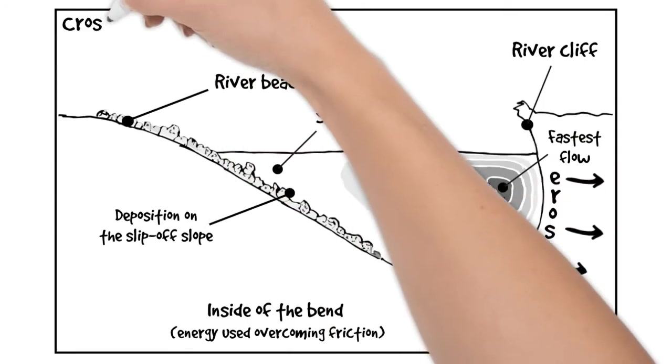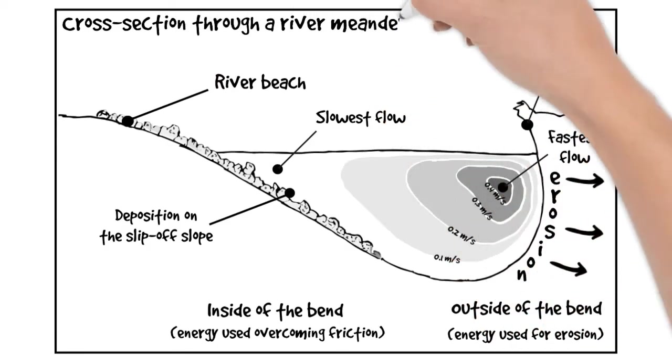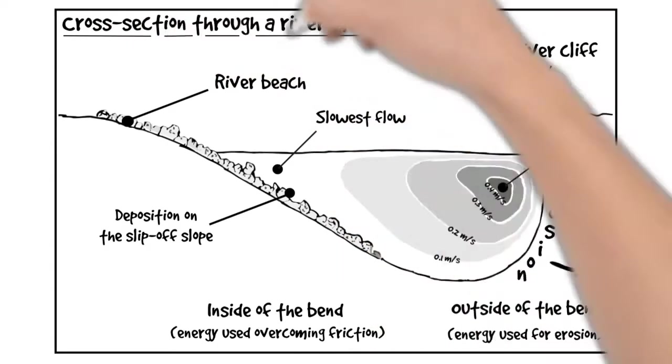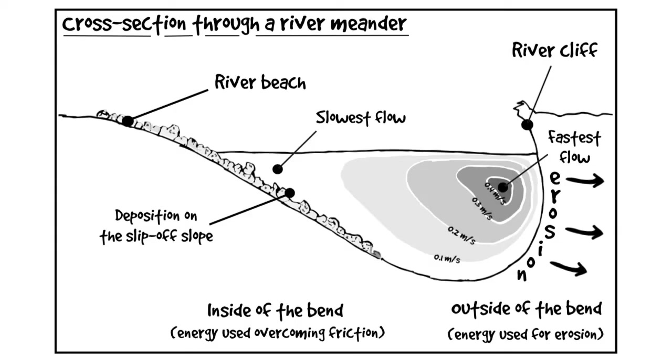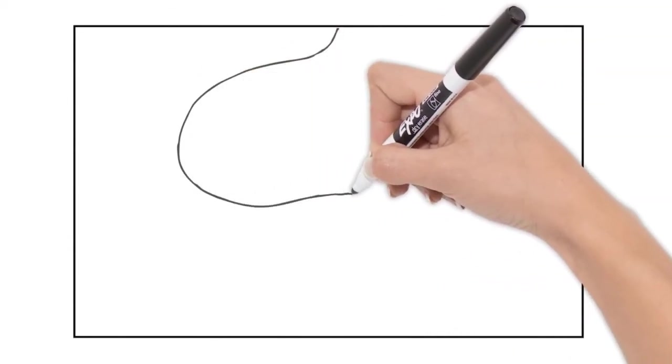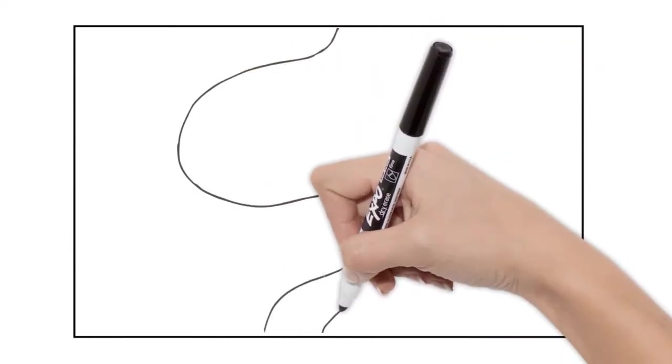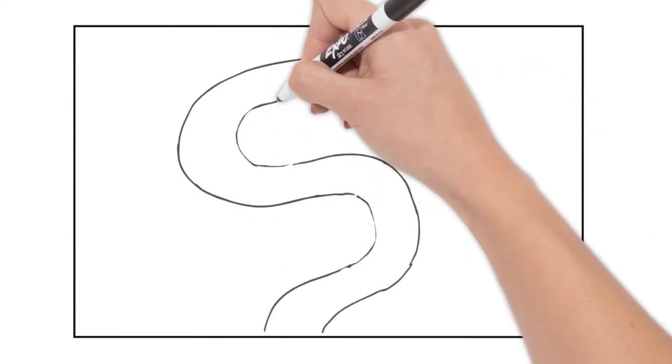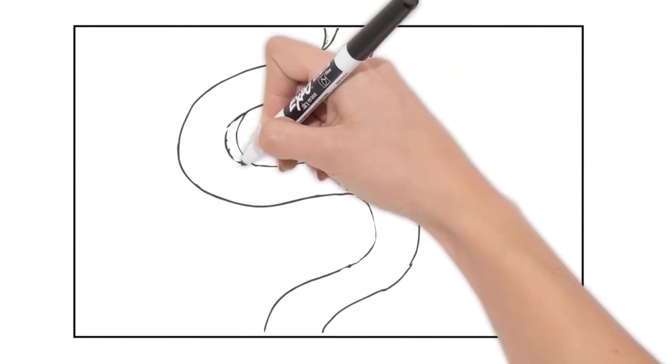Again don't forget to give your diagram a title and underline it. Now of course a cross section isn't the only diagram you can do. You can also do a plan view of a meander. So let's draw our river meandering, winding from side to side through its flood plain.